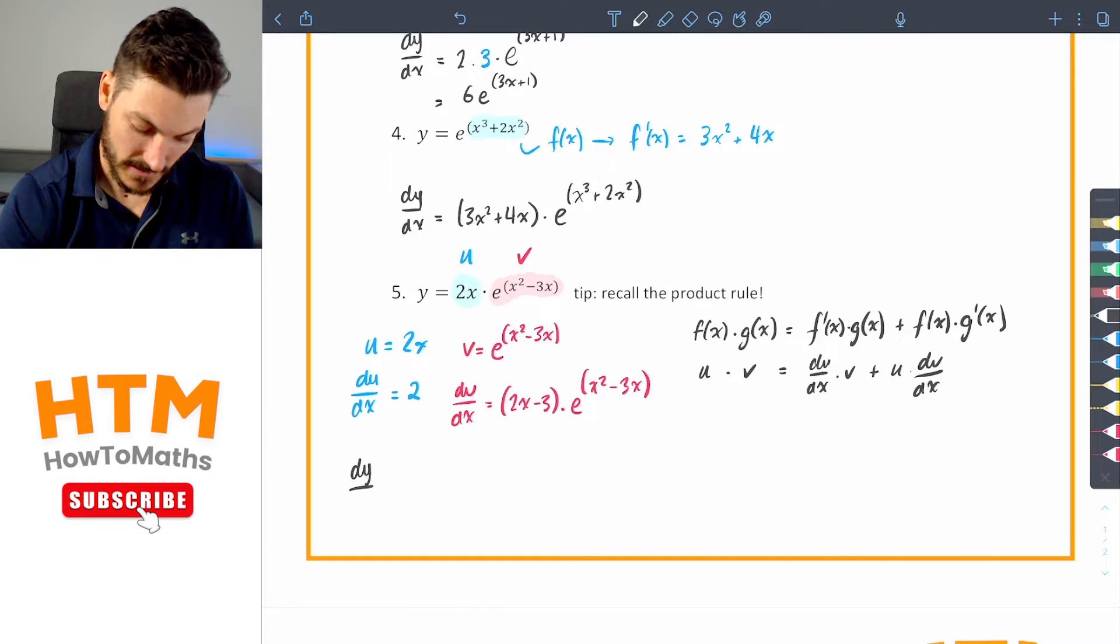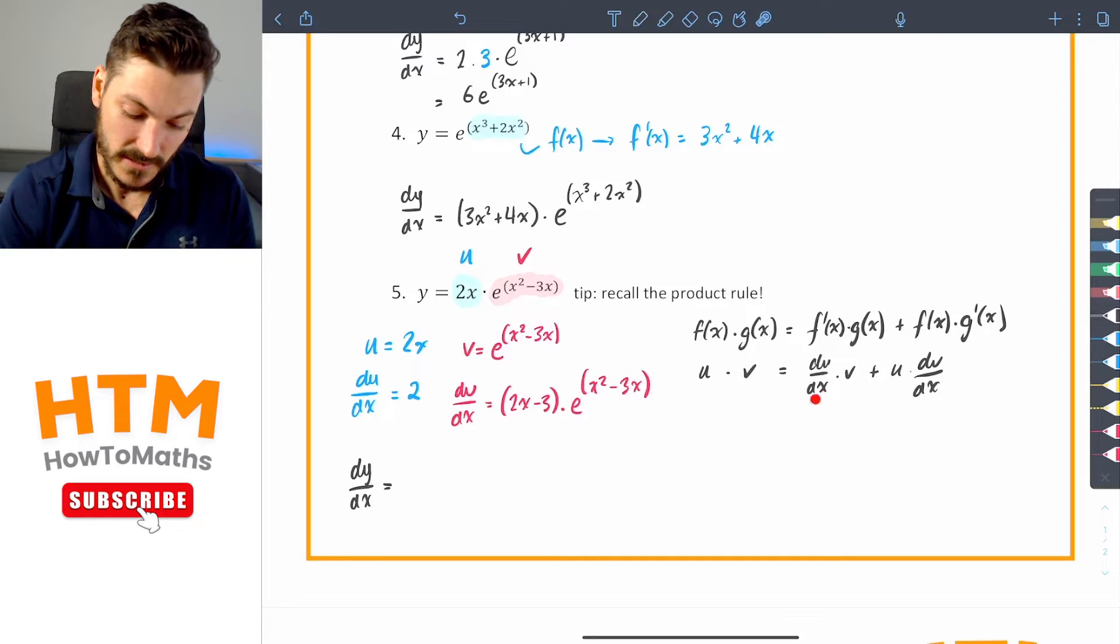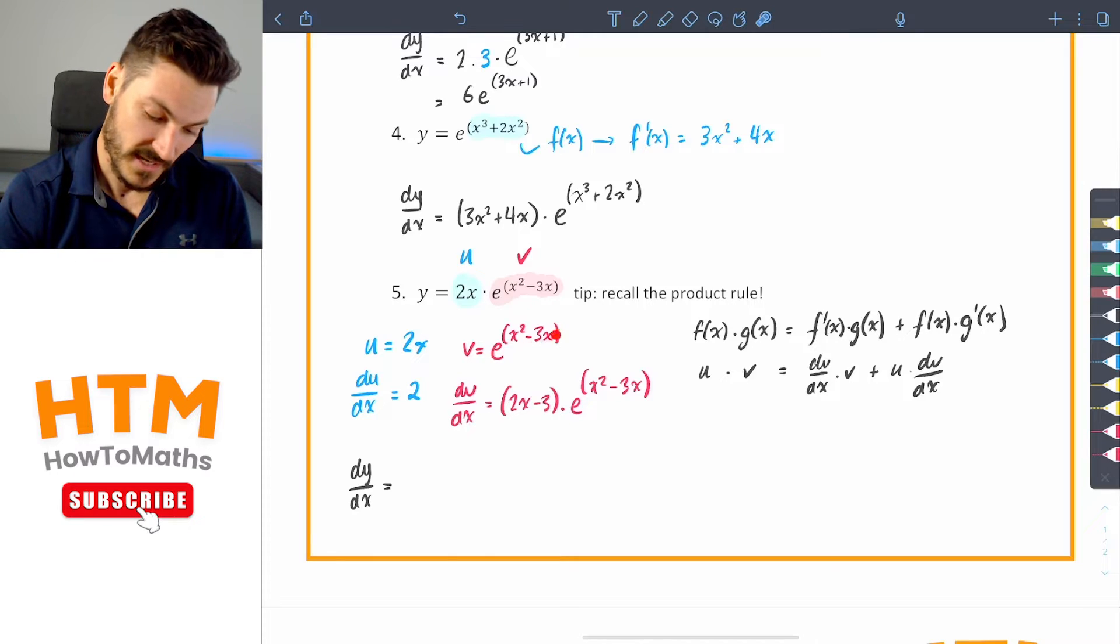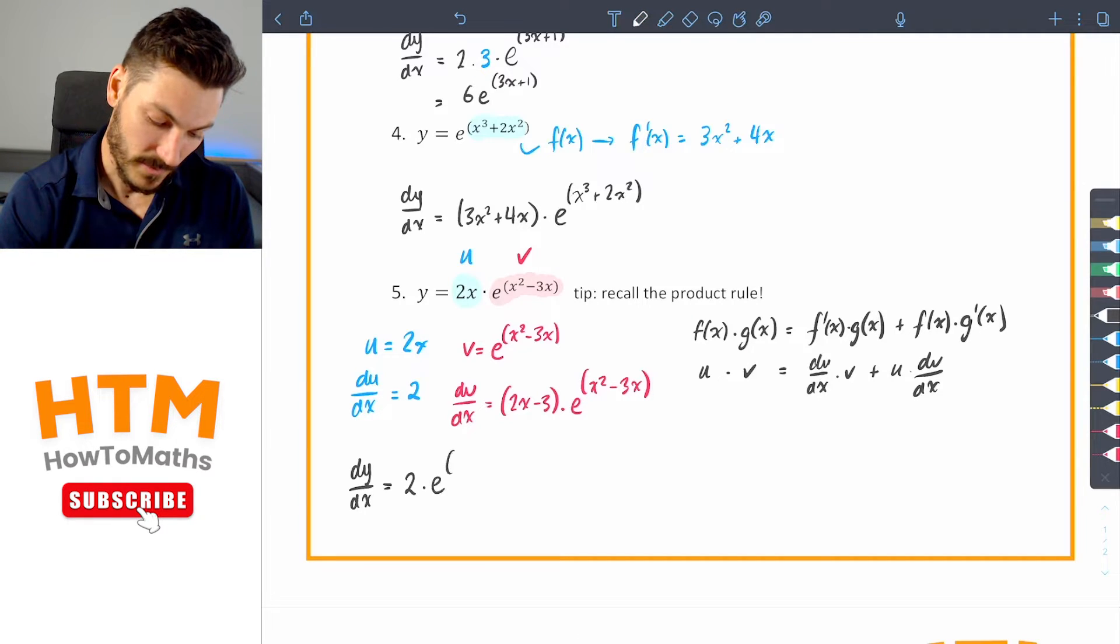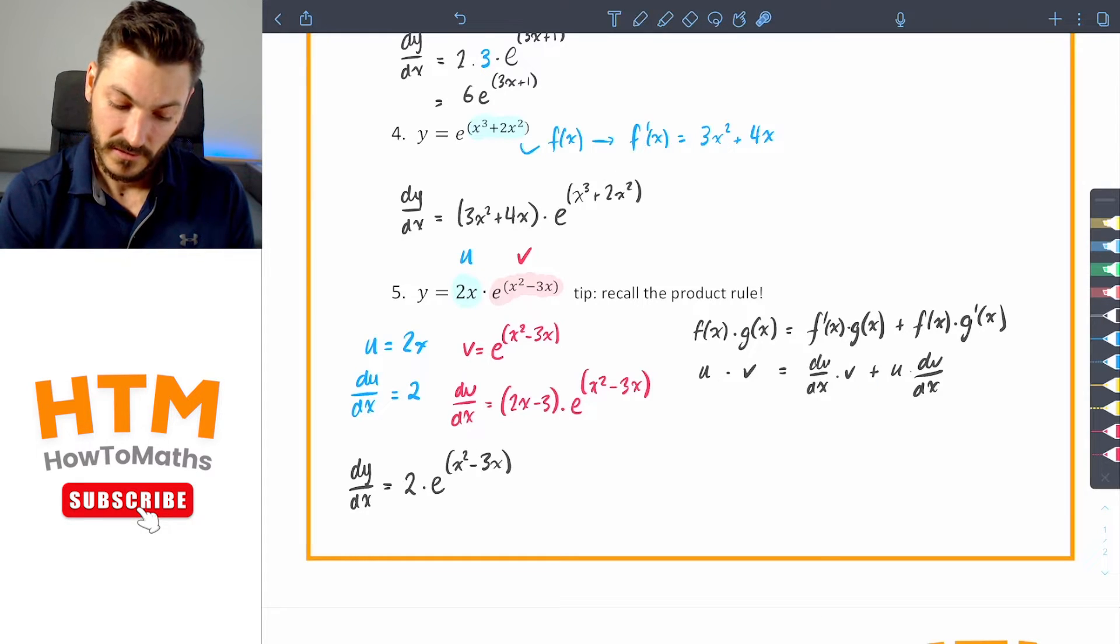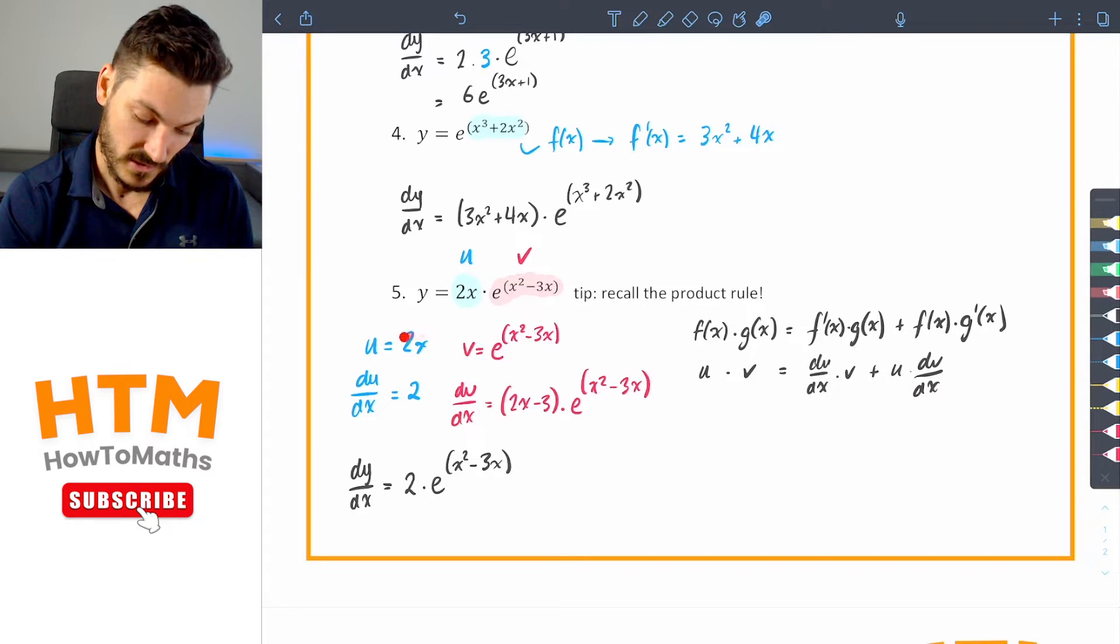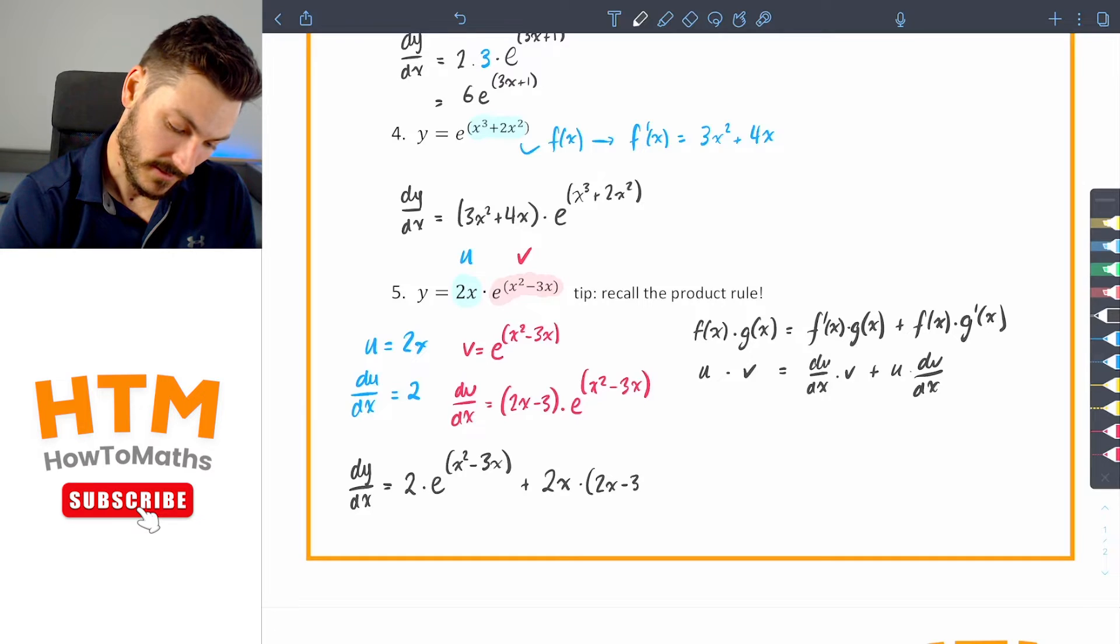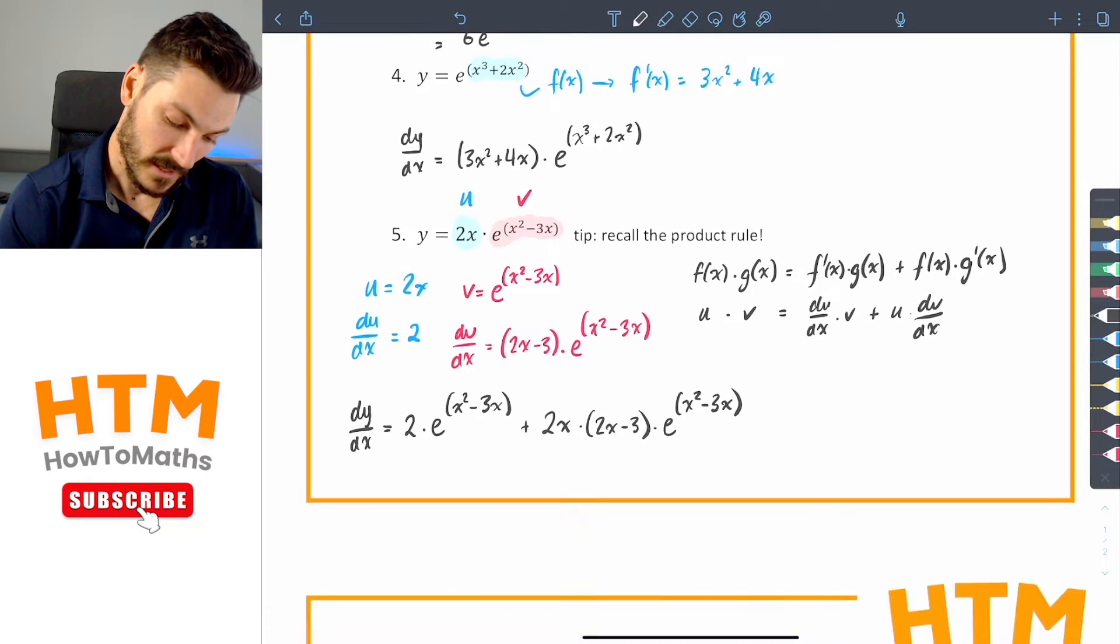So I get dy dx is going to be equal, I've written over here, I'm going to annotate here, du dx, which is our 2, times by v, which is our exponential here. So the answer is going to be 2 times e to the power of x squared minus 3x. That's our first part. Then we also have plus u times, and our u is 2x. So it's going to be plus this 2x times dv dx, which is this entire thing here. So we get plus 2x times 2x minus 3 times e to the power of x squared minus 3x.